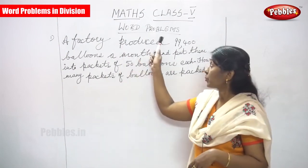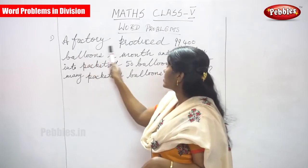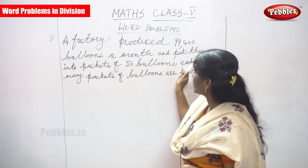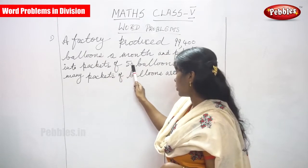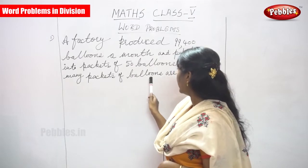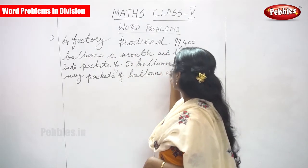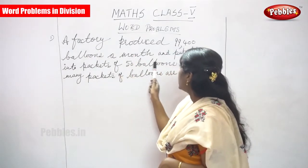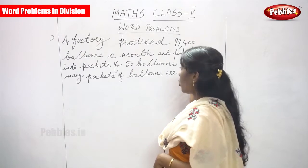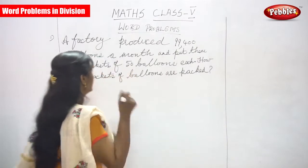Now we move on to word problems in division. The question is: A factory produced 99,400 balloons a month and put them into packets of 50 balloons each. How many packets of balloons are packed? Let's do the solution.